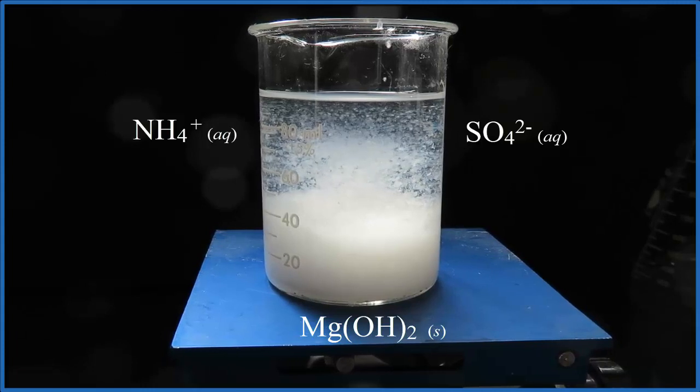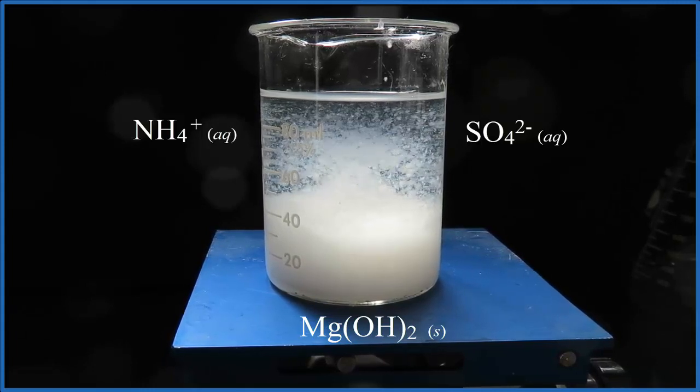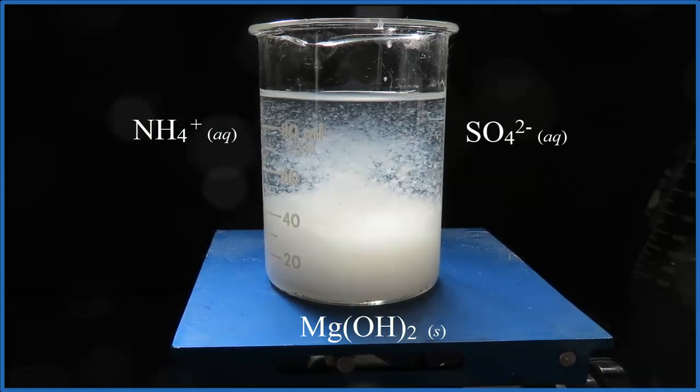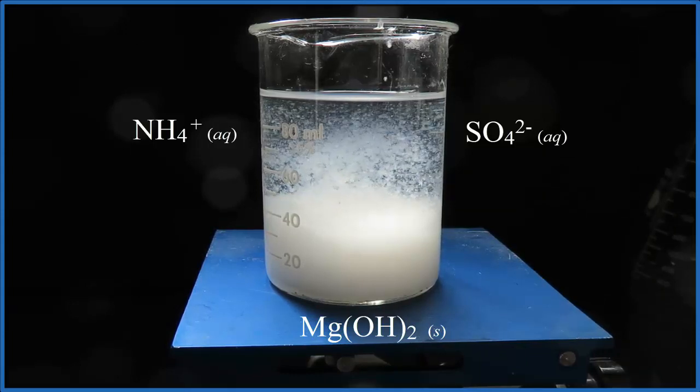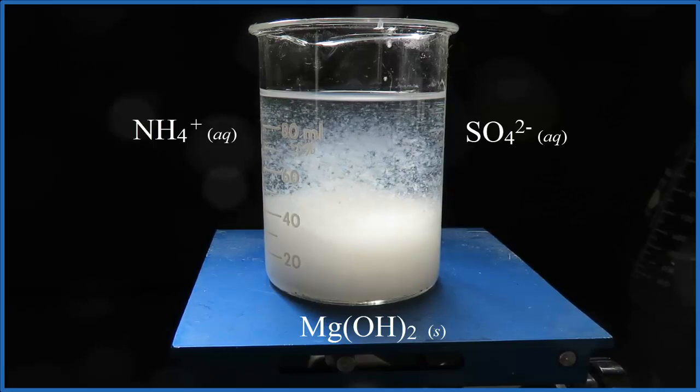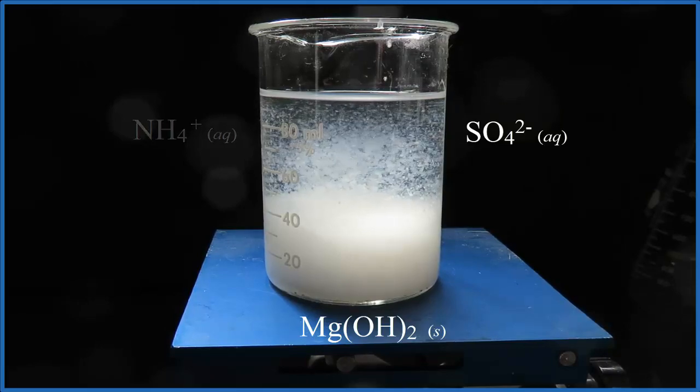This is Dr. B looking at what happens when we put magnesium sulfate and ammonia together. We get ammonium sulfate and magnesium hydroxide. And since magnesium hydroxide is insoluble, it's a solid, falls to the bottom of the test tube. Thanks for watching.